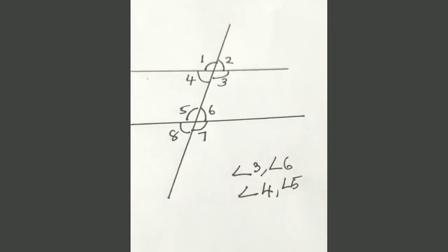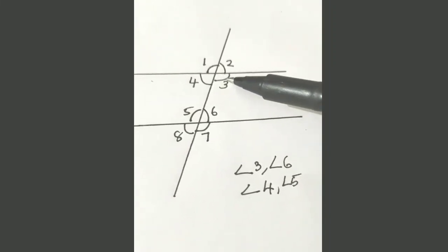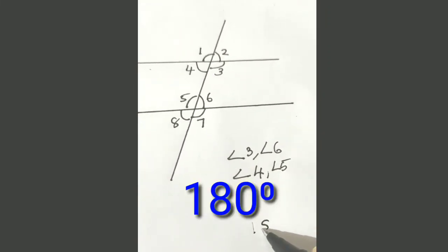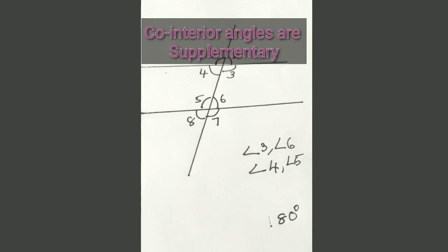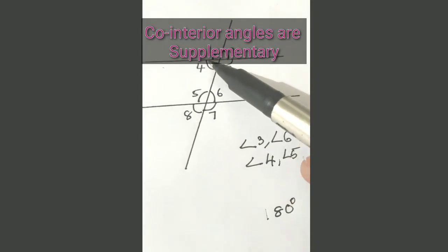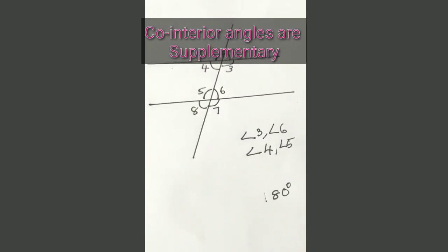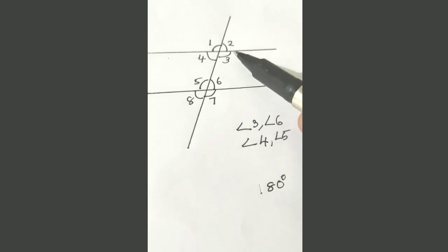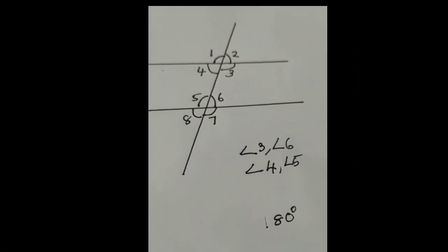We got two sets of co-interior angles. We can easily find out that if we add the measurements of these two angles it will be 180 degrees — that means co-interior angles are supplementary. Similarly, if we take the measurement of angle 4 and angle 5, their sum is also 180 degrees.